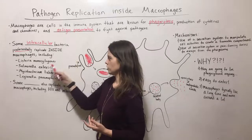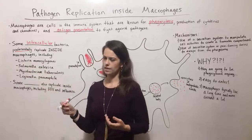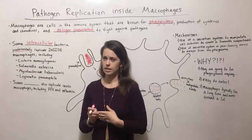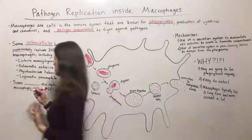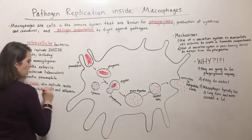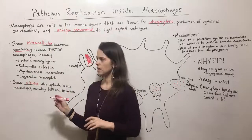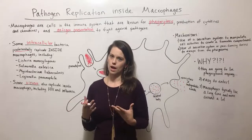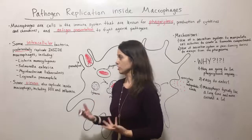Some of the bacteria that do this are things like Listeria, Salmonella, Mycobacterium, and Legionella. These cause things like food poisoning, tuberculosis, and Legionnaires' disease — so some pretty important pathogens. There are also some viruses that replicate inside macrophages, including HIV and influenza, although macrophages are not necessarily their preferred cell to replicate in, but they certainly can do it.